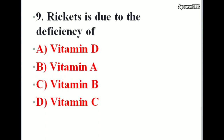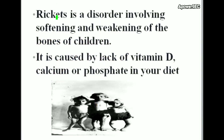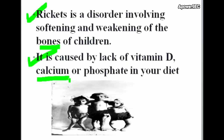Next question: Rickets is due to the deficiency of — options: Vitamin D, Vitamin A, Vitamin B, Vitamin C. Correct answer is Vitamin D. Rickets is a disorder involving softening and weakening of the bones of children, caused by lack of Vitamin D, calcium, or phosphate in the diet.